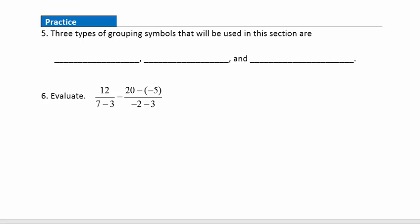Practice question five: the three types of grouping symbols used in this section are parentheses, brackets, and fraction bars.